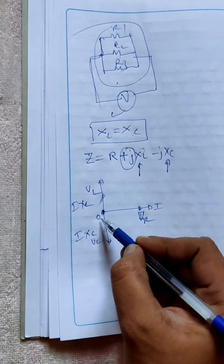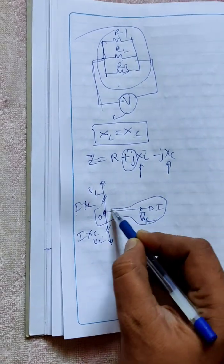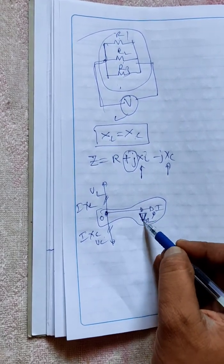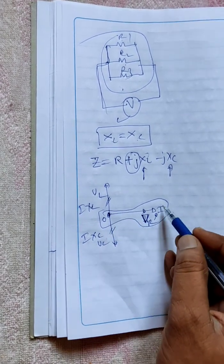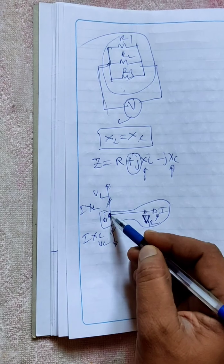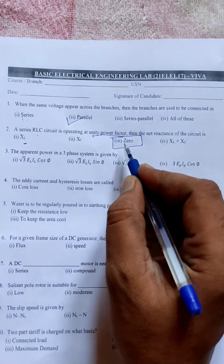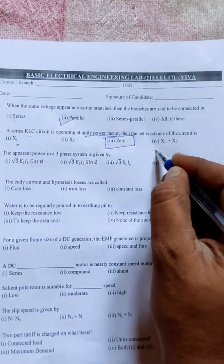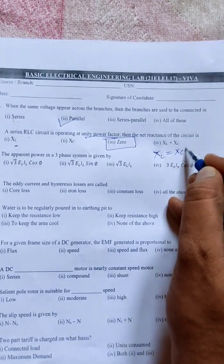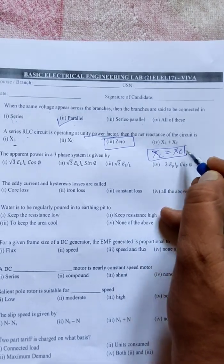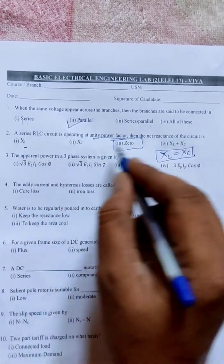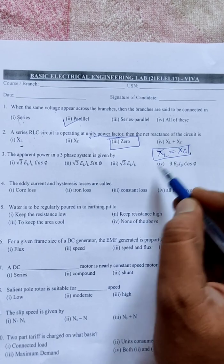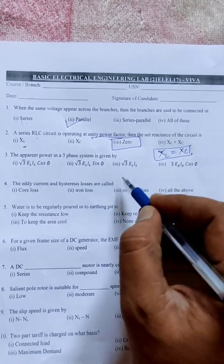Now overall, this is the phasor diagram. Voltage is coinciding with the current, so phase angle between voltage and current is zero. Cosine zero is one, so it operates at unity power factor. What is the net reactance? The net reactance will be zero. In the available options, this is the correct one - zero. Otherwise, you can make another option: the net reactance should be XL equals XC, which is also correct, but this option is not given here. The nearest option is zero only because both these reactances are opposite to each other, so they cancel each other when XL equals XC. The net reactance will obviously be zero.